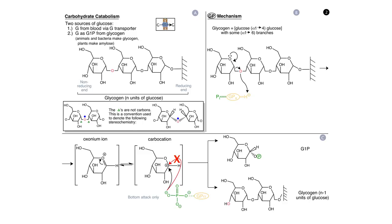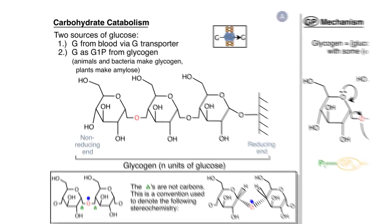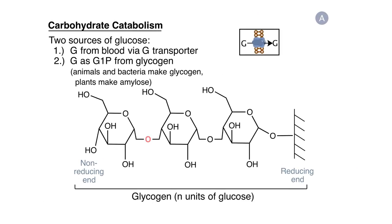The second option is to take glycogen, the polymeric storage form of glucose, and degrade it to glucose 1-phosphate, which will then be converted to glucose 6-phosphate and enter the pathway of glycolysis. We're going to start with this pathway of glycogen breakdown, or glycogenolysis.